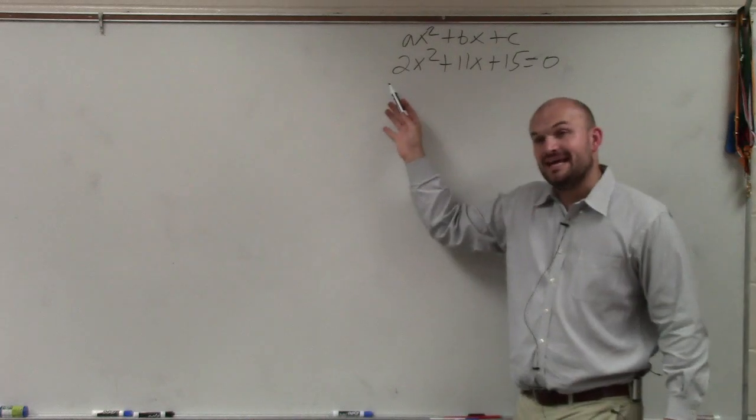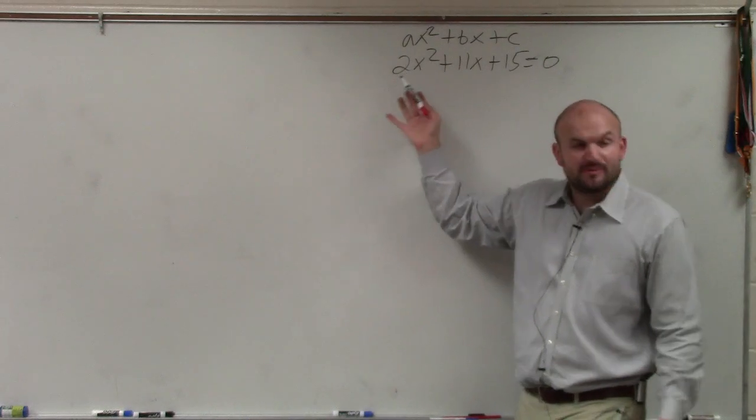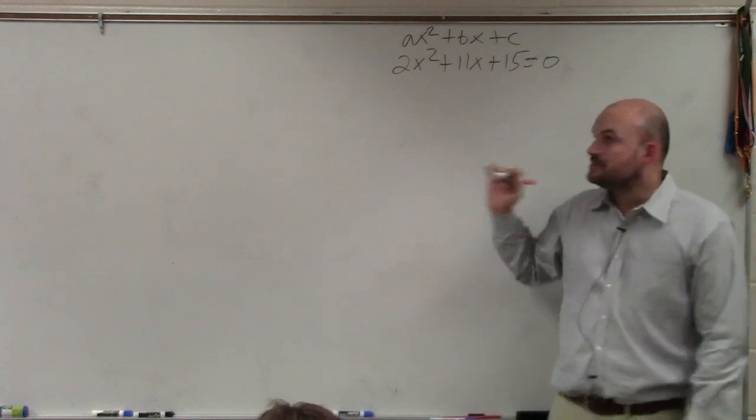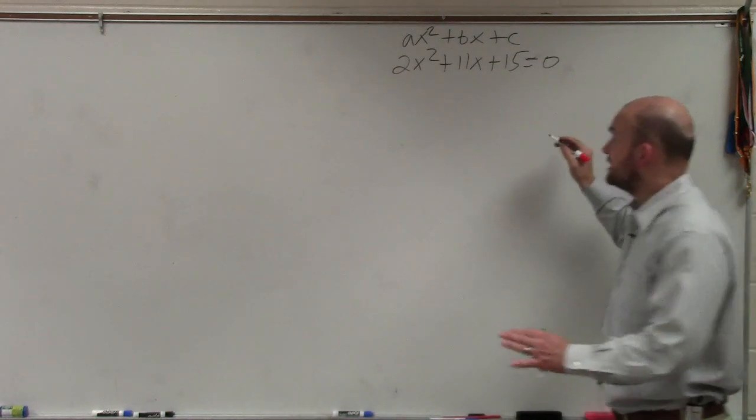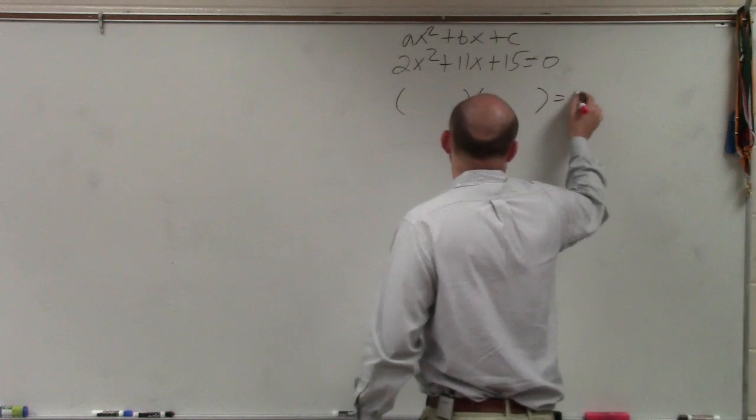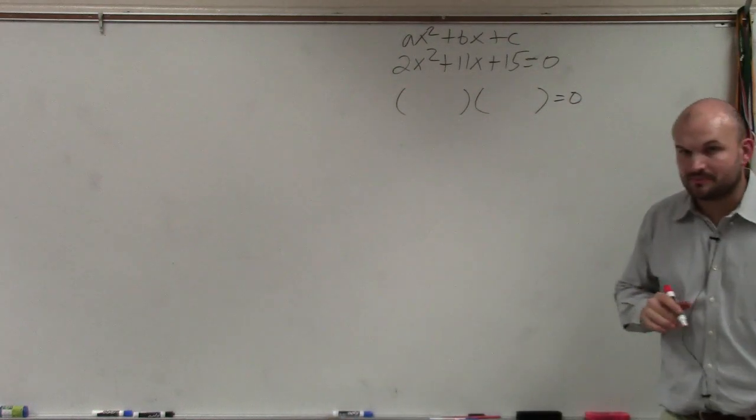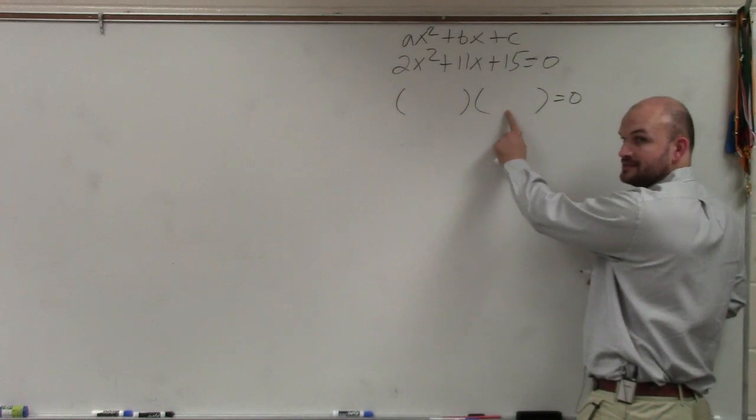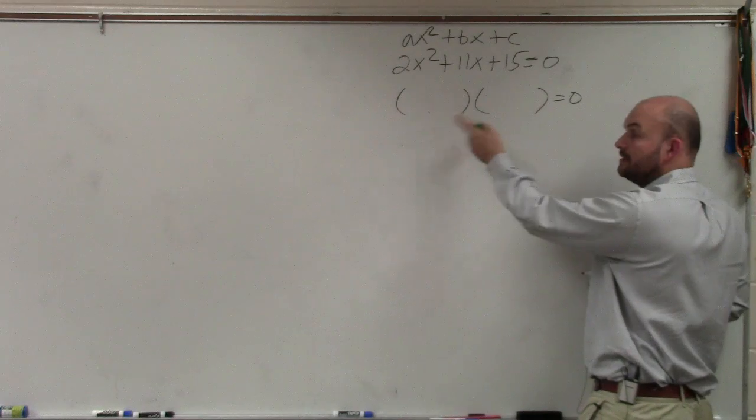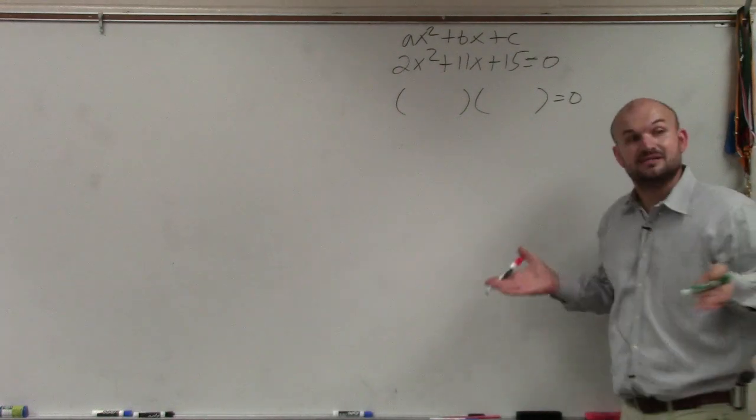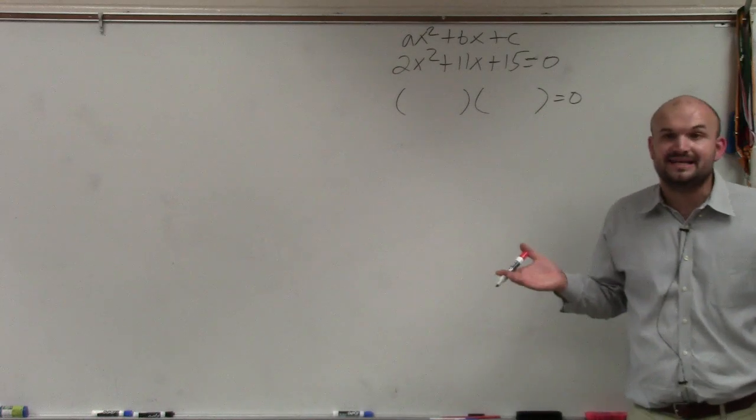You can see that my a is now 2, where before there wasn't a number there, it was technically 1. So we're still going to follow the same techniques here. We still need to create two different trinomials. However, now my first two terms have to give me 2x squared. Now this one would be fairly simple. We know one's going to be 2x and the other one's going to be x. But sometimes it might be like 16x squared.